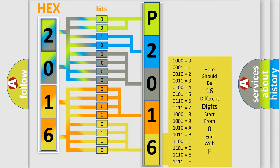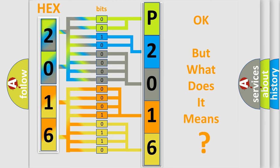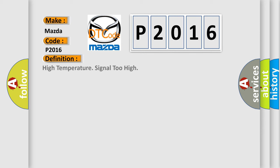We now know in what way the diagnostic tool translates the received information into a more comprehensible format. The number itself does not make sense to us if we cannot assign information about what it actually expresses. So, what does the diagnostic trouble code P2016 interpret specifically for Mazda car manufacturers? The basic definition is: High temperature signal too high.